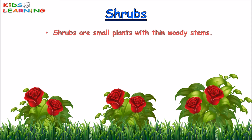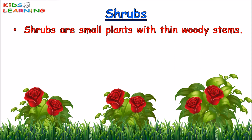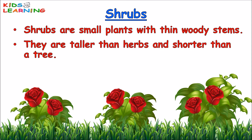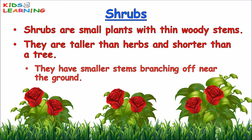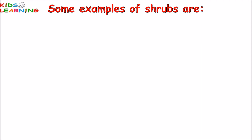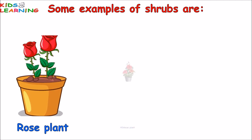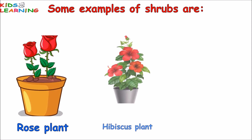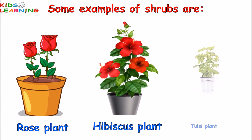Shrubs. Shrubs are small plants with thin, woody stems. They are taller than herbs and shorter than a tree. They have smaller stems branching off near the ground. Some examples of shrubs are the Rose plant, Hibiscus plant, and Tulsi plant.